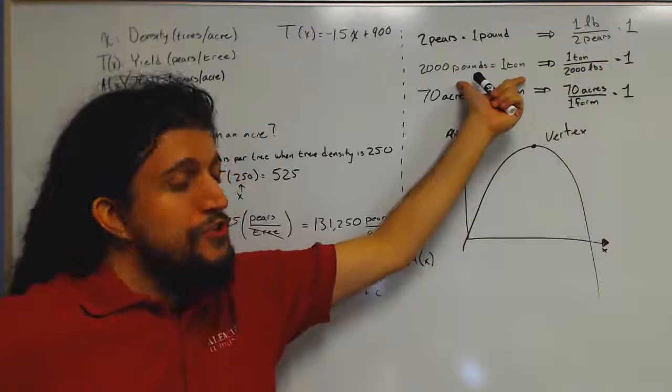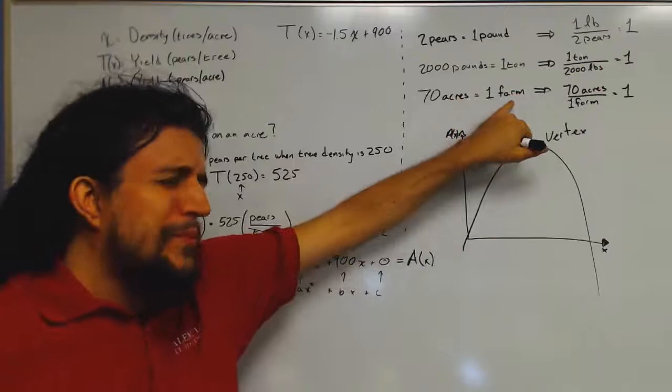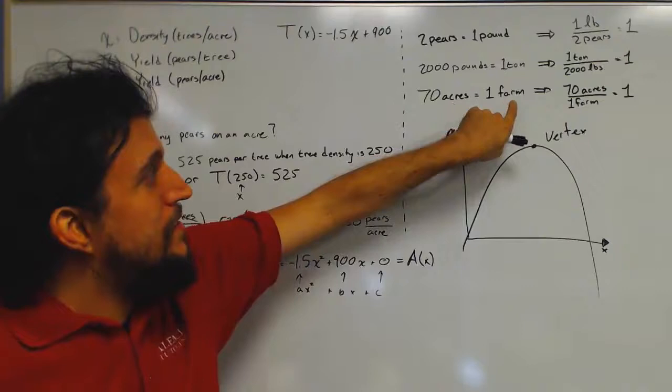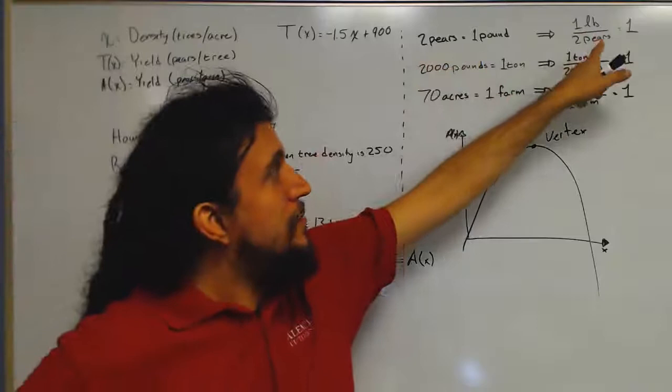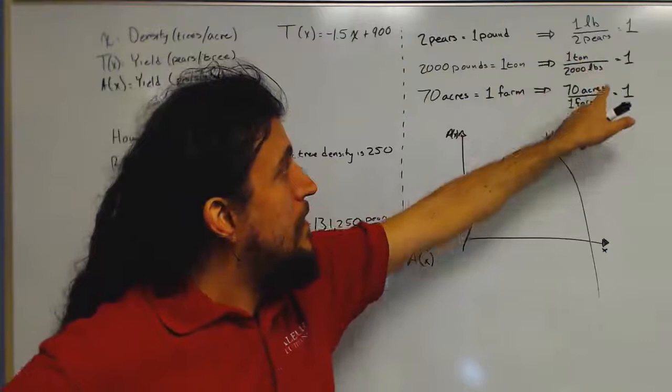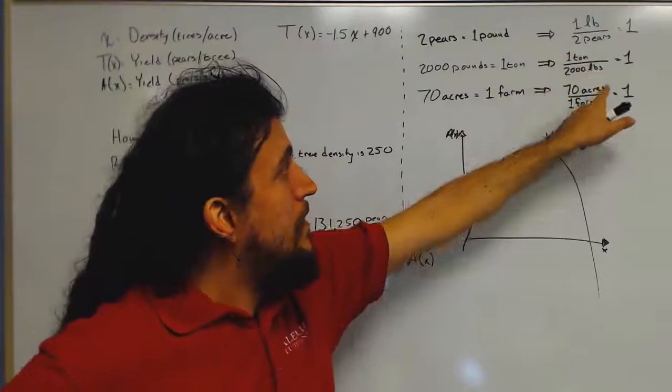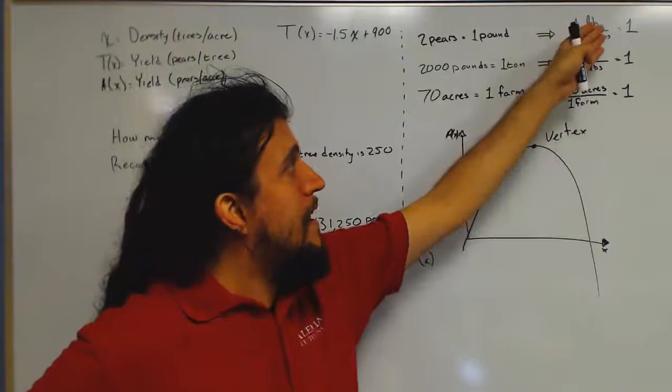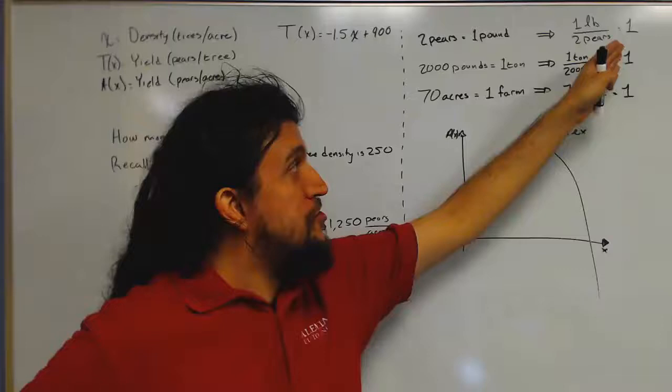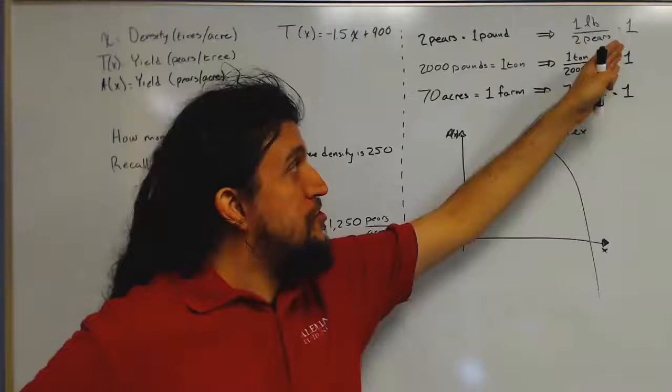We also know that there are 2,000 pounds in one ton. So I write an equation here that relates those two units to each other. And lastly, I kind of made this one up, but it will make sense in the end. There are 70 acres on one farm, the farm in question. So that's how this unit relates to that unit. Just doing a little bit of division here, we find that if we divide by one side, we get these little fractions here that all equal to one. So we can basically multiply any number by, say, one pound over two pairs, and it won't change the value of the function. We're just multiplying it by one. We're not changing anything about the function. We're just changing the units.